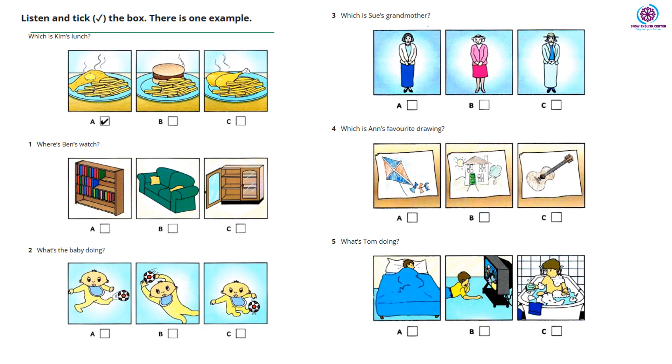Three: Which is Sue's grandmother? Is that your grandmother, Sue, in the short skirt? No, she's wearing a long skirt. And is she wearing a hat? Yes, that's right. Look, there she is.